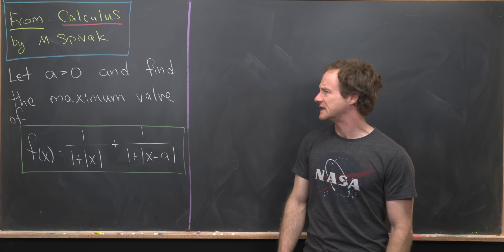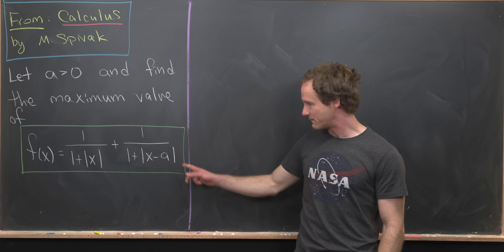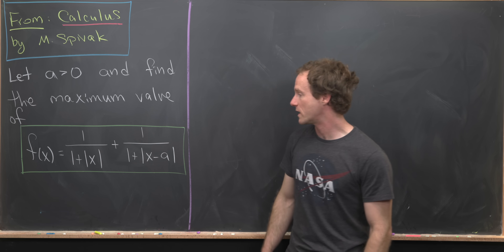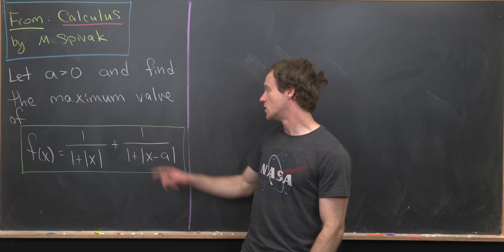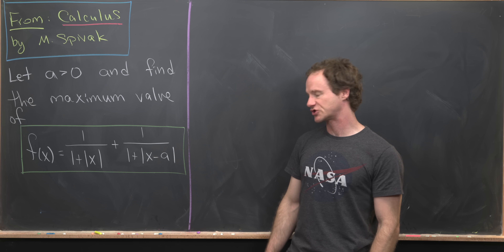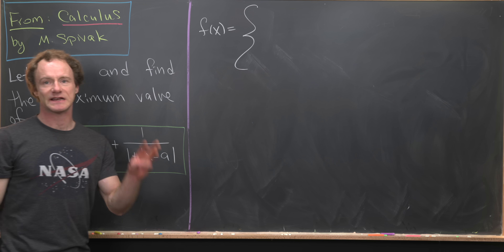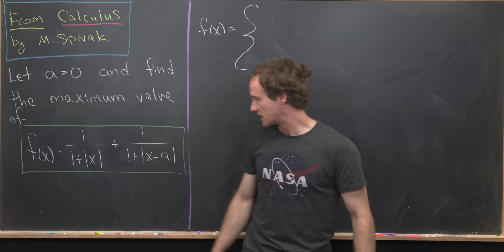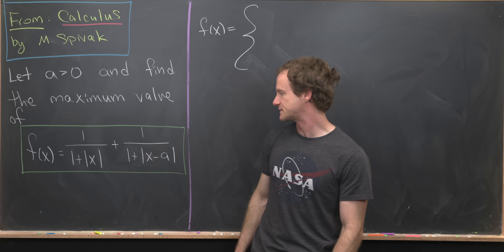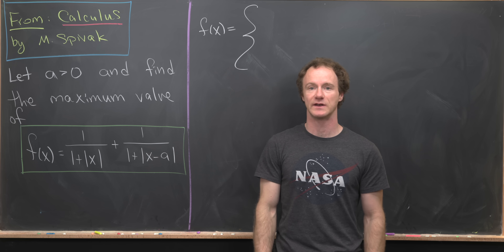We want to let a be a positive real number — so it's bigger than zero — and then find the maximum value of the function defined by f(x) = 1/(1 + |x|) + 1/(1 + |x − a|). To get started, I want to split this function into three pieces depending on whether the input into each absolute value is positive or negative, or both have some overlapping positiveness or negativeness.